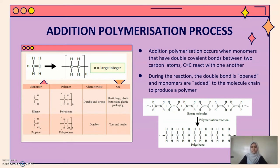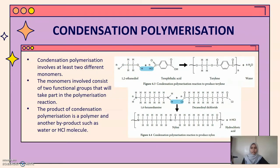As you can see on the photo that I attached. There is also condensation polymerization. Condensation polymerization involves at least two different monomers. The monomers consist of two functional groups that will take part in the polymerization reaction. The product of condensation polymerization is a polymer and another byproduct such as water or hydrochloric acid.